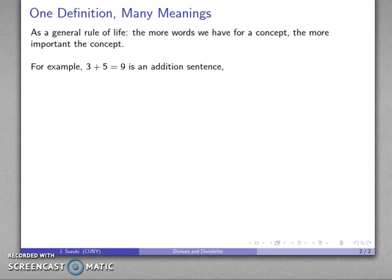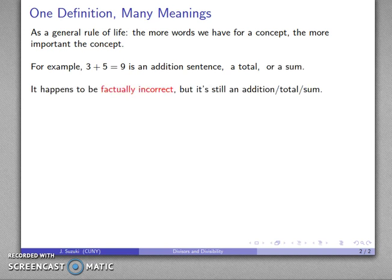For example, let's take 3 plus 5 equals 9, and we could say that this is an addition sentence. We could also call it a total. We might also call it a sum. It happens to be an incorrect addition sentence, total, or sum, but nevertheless, it is still an addition sentence, a total, a sum, and we have lots and lots of words for this same basic thing.